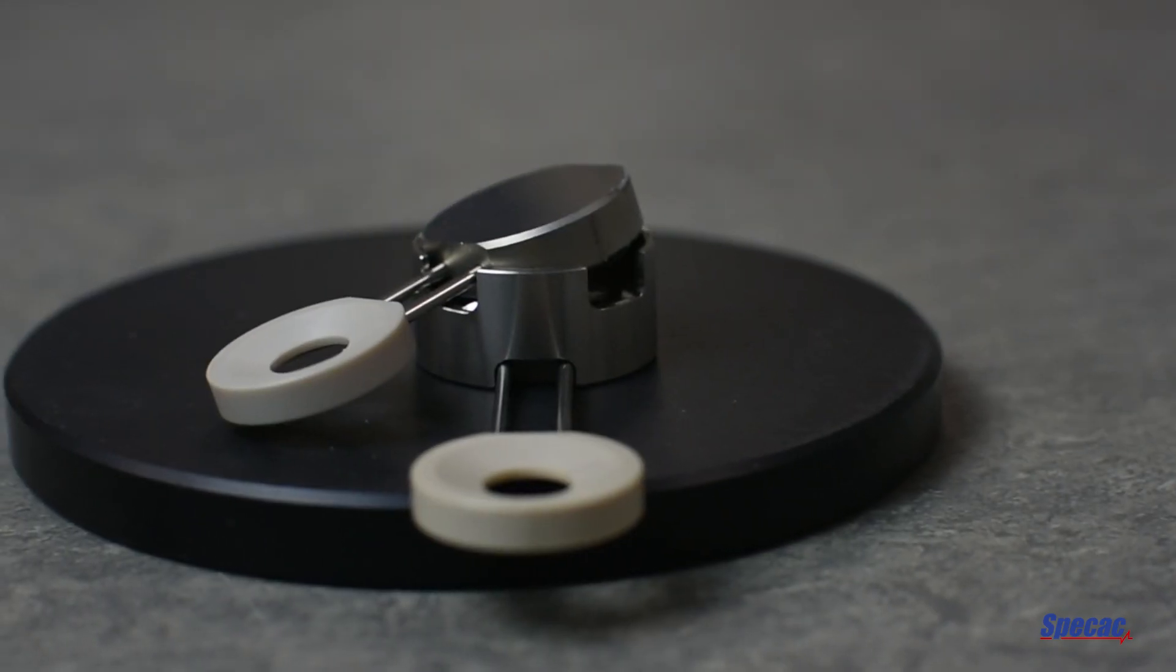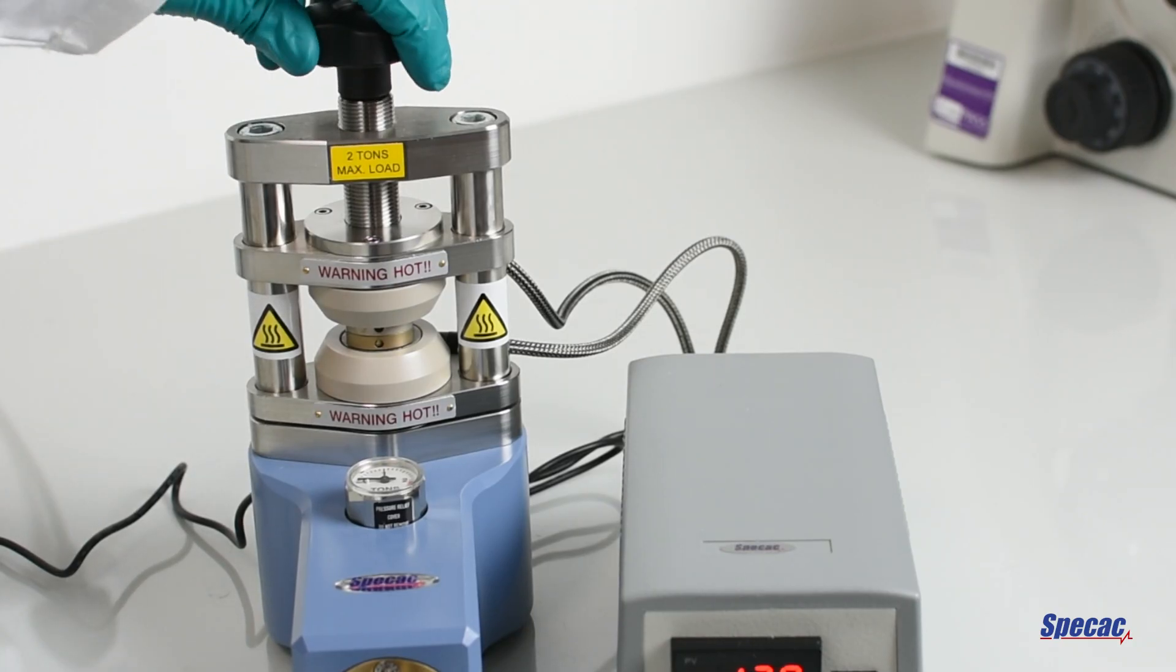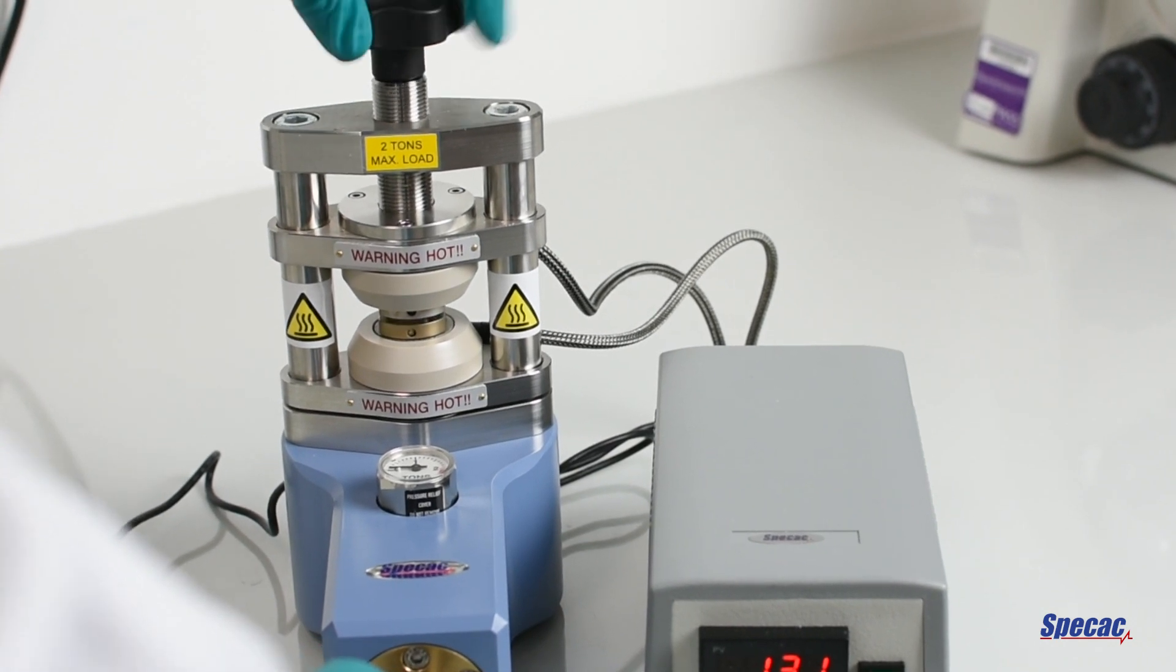Once the temperature of the press has stabilized, the prepared film maker assembly is ready to be placed into the press. To insert the constructed film maker assembly into the press, turn the lead screw knob anticlockwise to create a gap between the heated surfaces.